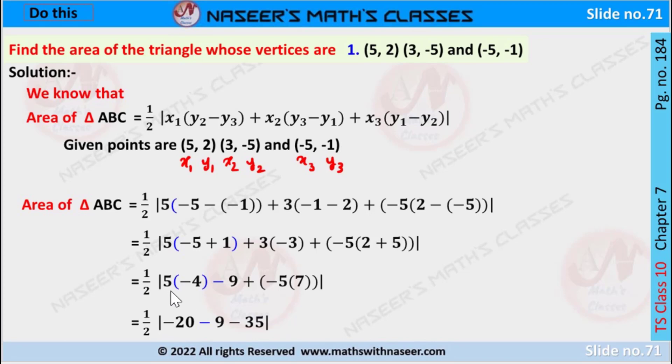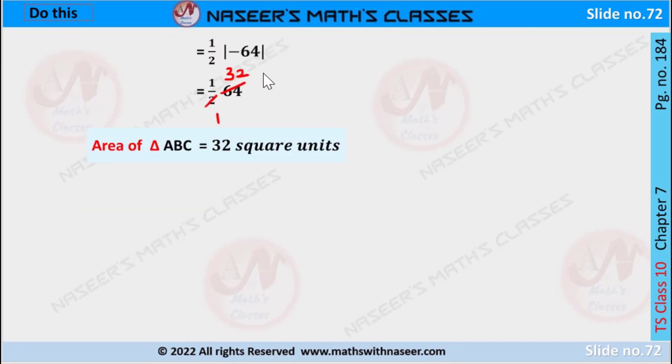we can write it as 1/2 into mod[-20 - 9 + (-35)], and after adding above values we get -64. Modulus of -64 is written as +64.